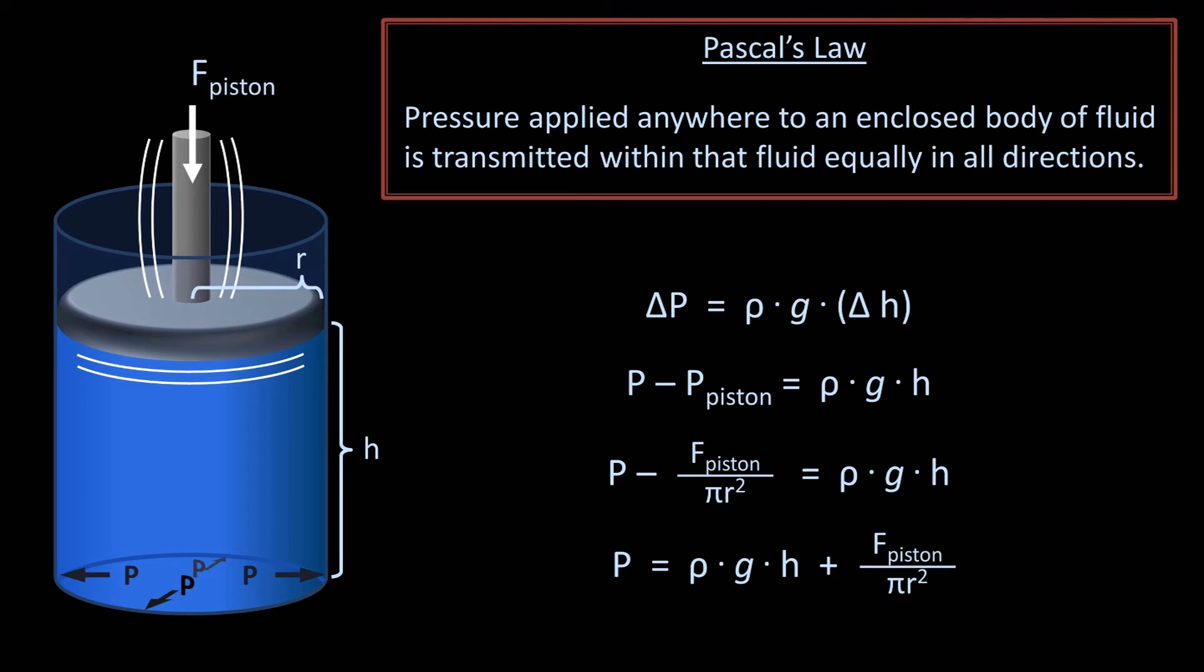You may not immediately realize it, but this solution depends upon the fluid being non-compressible, which we said was an assumption made for liquids in elementary fluid mechanics, though this would not hold true for gases. If the glass below the piston was filled with a compressible gas, the density of the gas would be a function of the pressure applied to it, and our solution would look a bit more complicated.